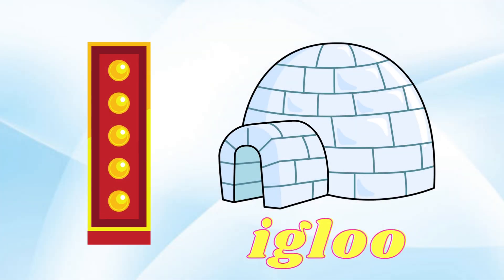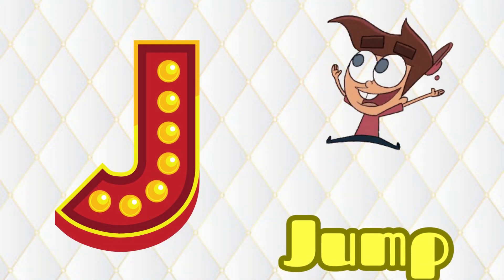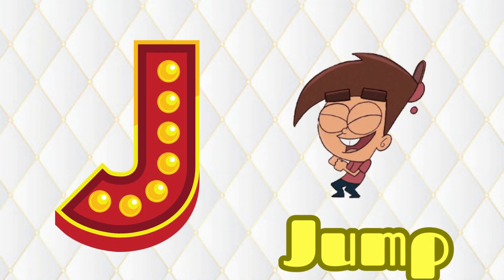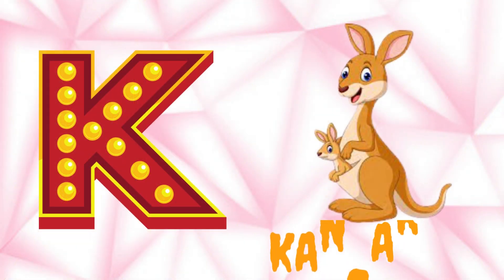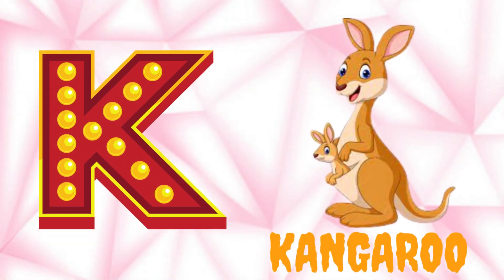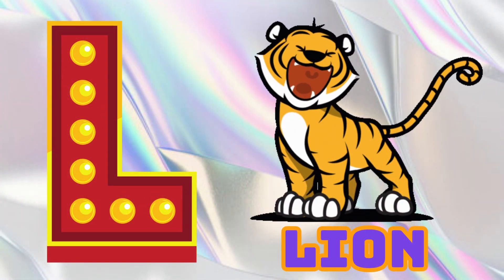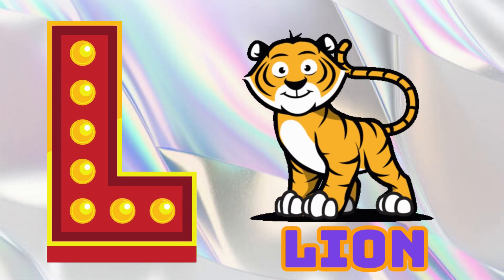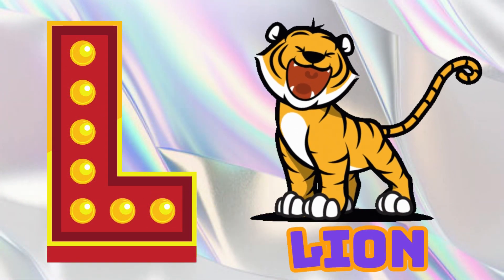I is for Igloo, I-I-Igloo. J is for Jump, J-J-Jump. K is for Kangaroo, K-K-Kangaroo. L is for Lion, L-L-Lion.